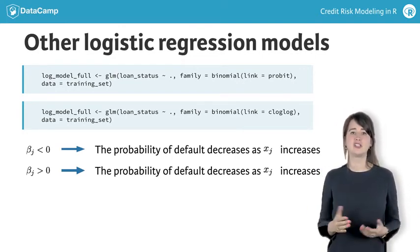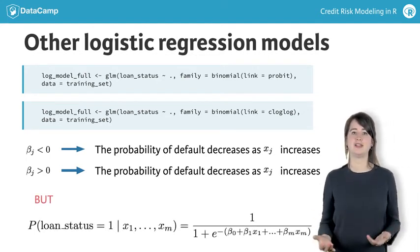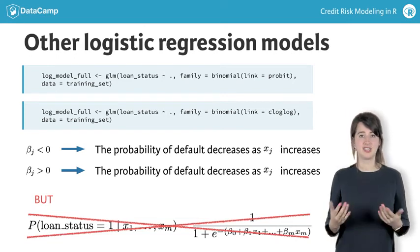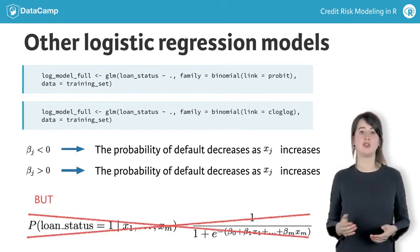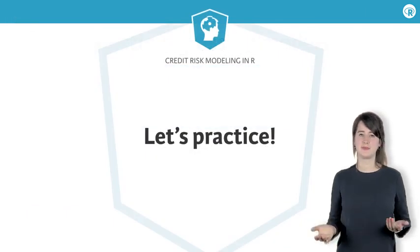However, the function describing the relationship between the parameter estimates and the actual probabilities of default changes and is slightly more complex. Nonetheless, predictions are still very easy to obtain using R. Now, let's finish the chapter with some exercises.